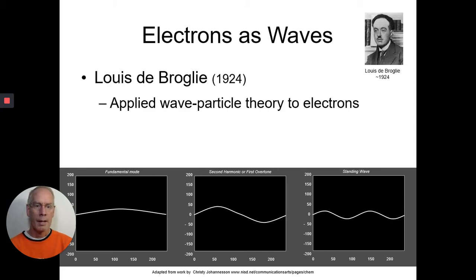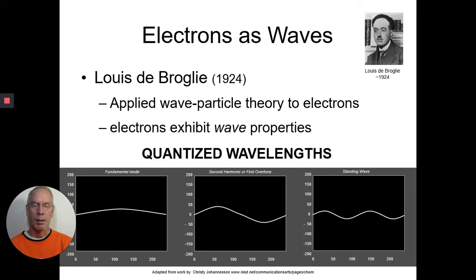So De Broglie applied his wave particle theory to electrons. And he said, sure enough, they're going to exhibit wave properties. But there are only certain allowable wavelengths that come out. Only certain ones will be allowed. So it's not that it can be any wavelength. And so we term that quantized.